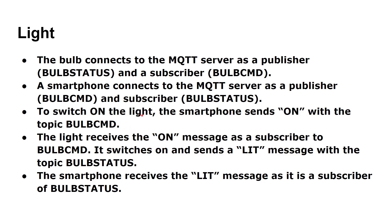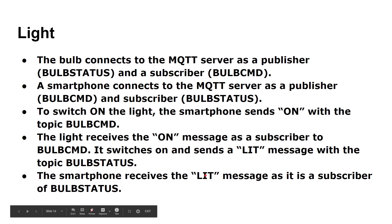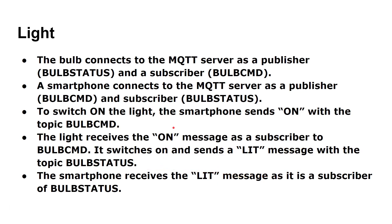To switch on the light, the smartphone sends the on command — it could send '1,' it could send 'on,' it could send 'turn on,' whatever you decide — inside the topic of 'bulb command.' The light receives the on message as a subscriber to bulb command, switches itself on, and then sends a 'lit' message with the topic of 'bulb status.' The smartphone then receives the 'lit' message as it is a subscriber to bulb status.